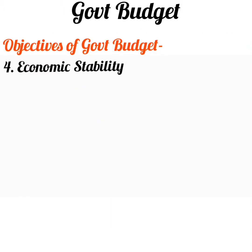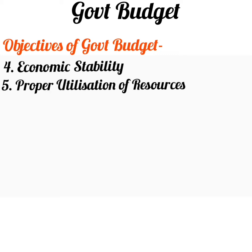Economic stability: proper management of the economy is a must for economic stability. Budget helps the government to overcome problems like inflation, recession, and other economic problems. Proper utilization of resources: the government has scarce resources in comparison to the needs of people in the economy. Through budget, the government allocates resources in such a manner that it leads to optimum utilization of limited resources, so that the maximum possible development can be done within the available limited resources.